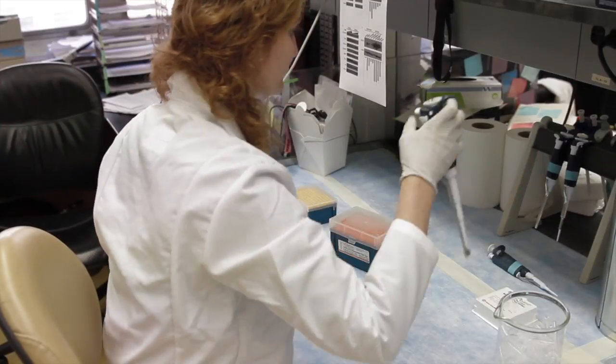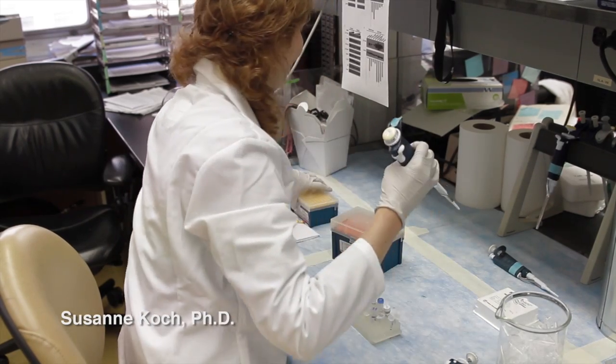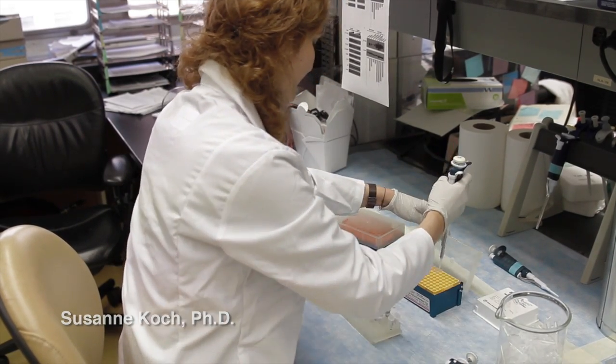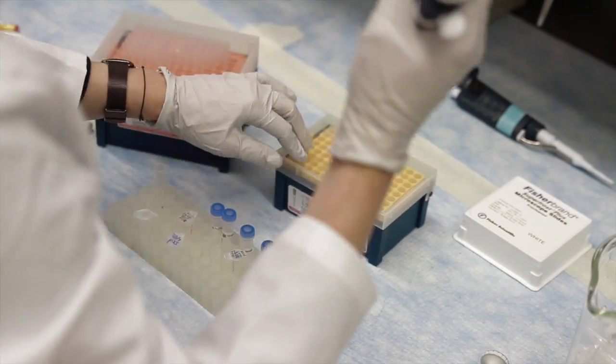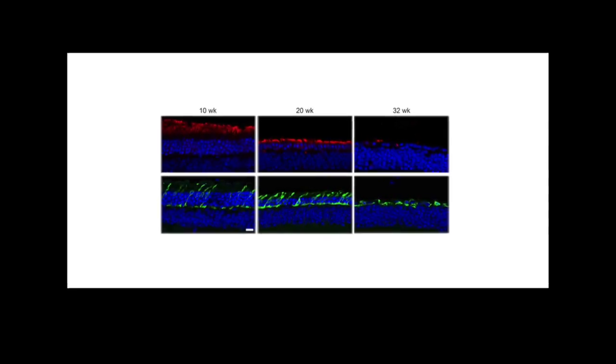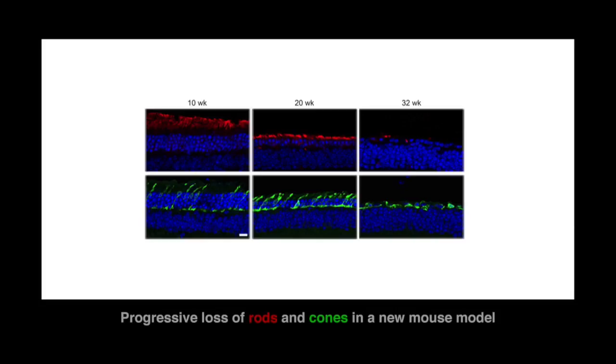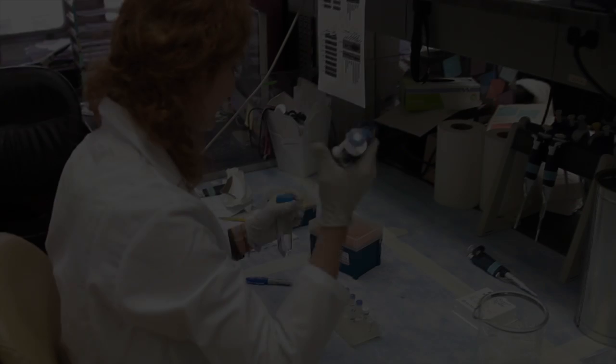We generated a mouse model of retinitis pigmentosa in which the mutant rod-specific PDE6-beta gene leads to the degeneration of rods followed by the death of cones. The importance of the model is that it allowed us to restore the mutant gene in all rod photoreceptors at any time point of disease progression.